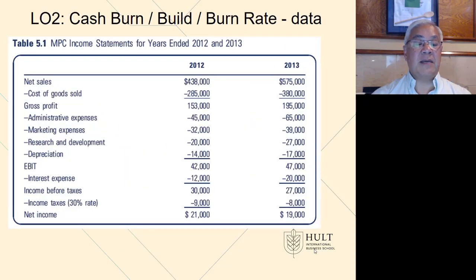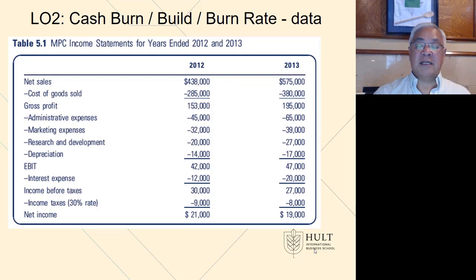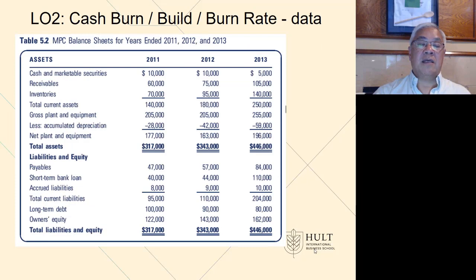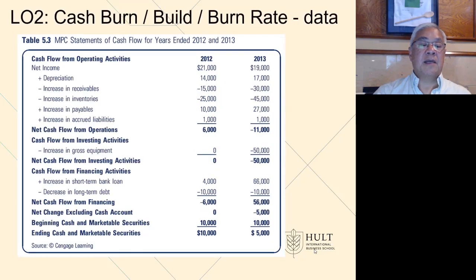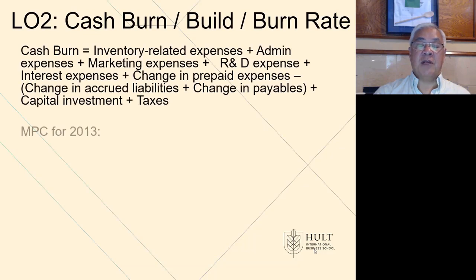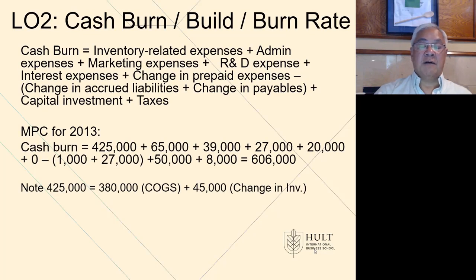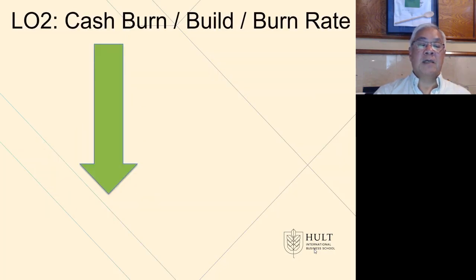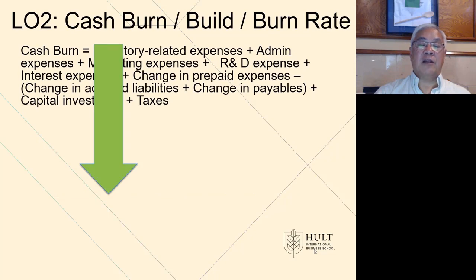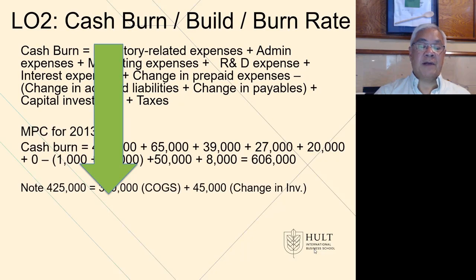From the income statement we see cost of goods sold of 380, and the administrative, marketing, and R&D figures. On the balance sheet we see changes in payables and short-term loans. On the statement of cash flows we see changes in items such as investing activity of increasing gross equipment. That's all captured here, and we get to the net number of 606 as the burn rate for the period. The lower the cash burn, the better.